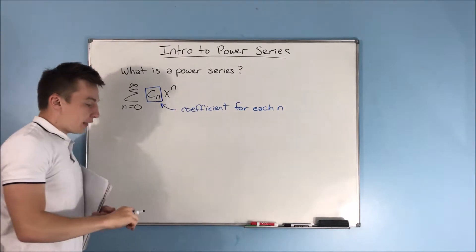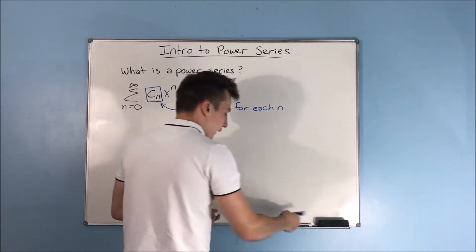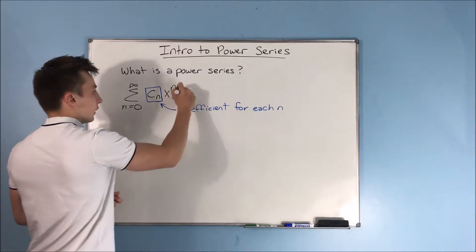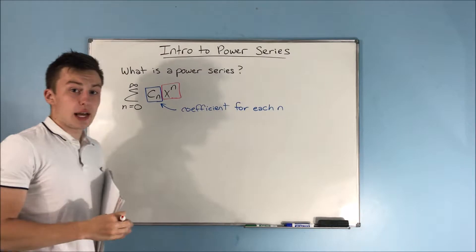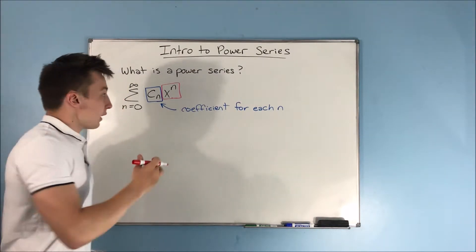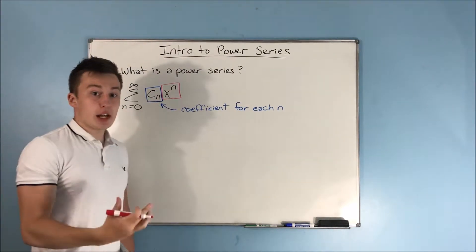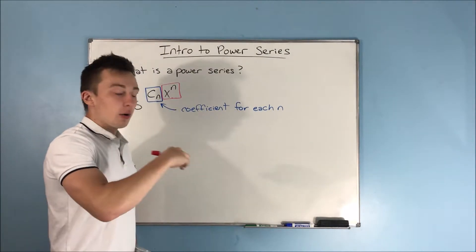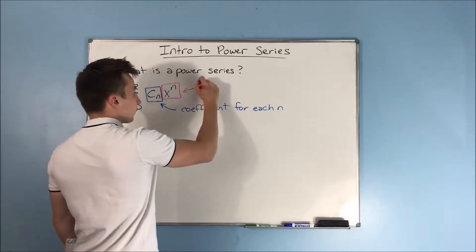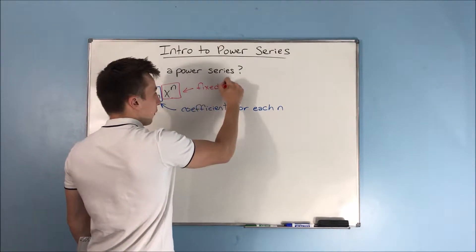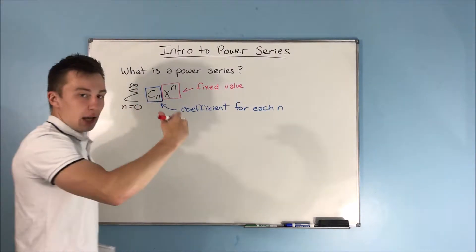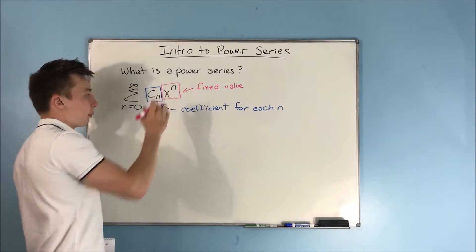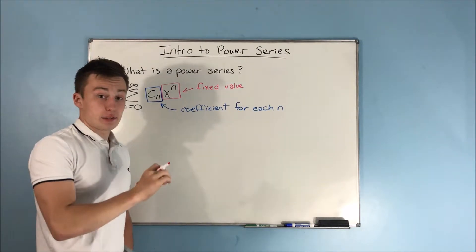Next we have x to the n, and this is what makes it a power series — the addition of this variable x. Now x is a fixed value; it's not something like n where it's changing in each term. x is a fixed value raised to the nth power, which of course the nth power is what's making it change, but x itself is fixed.